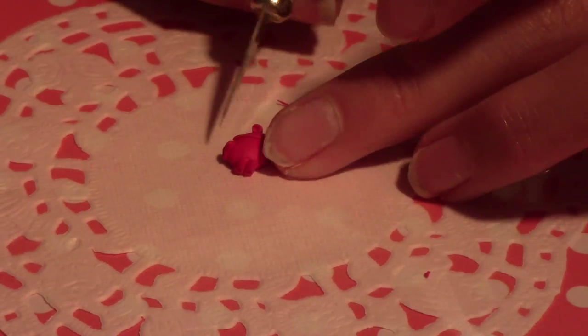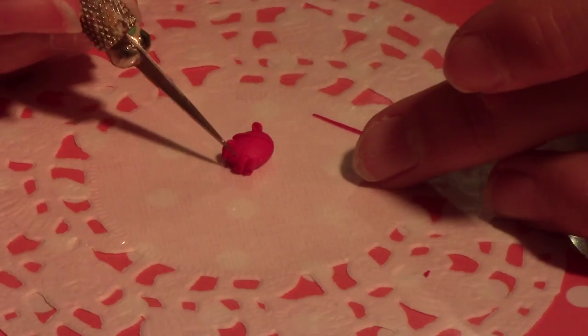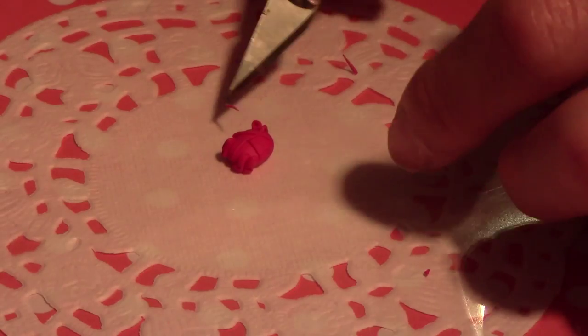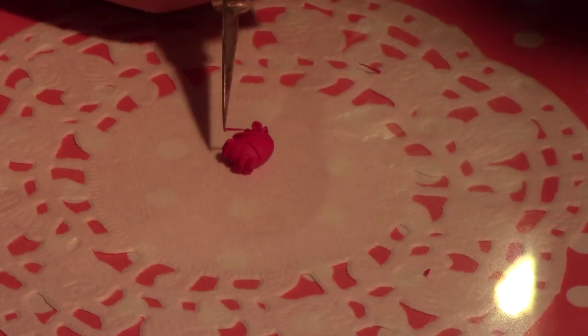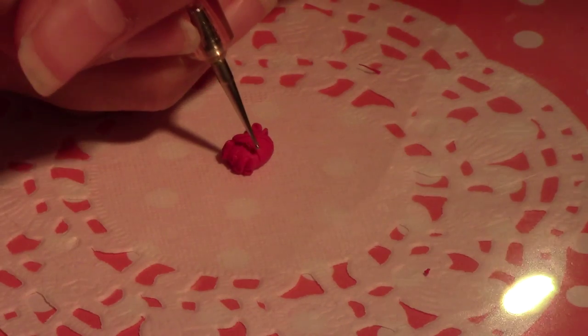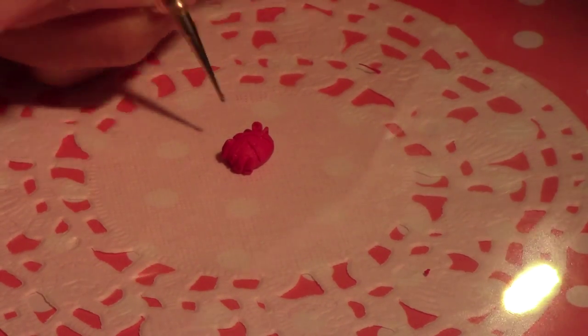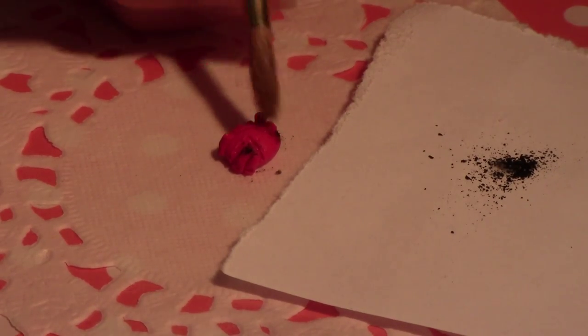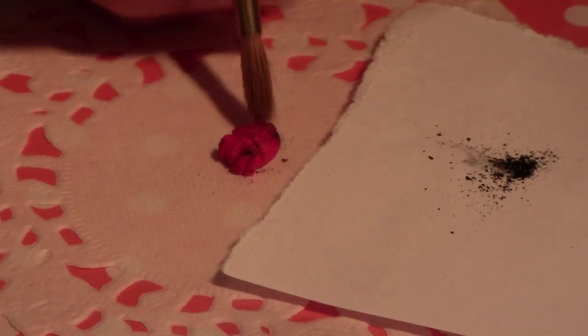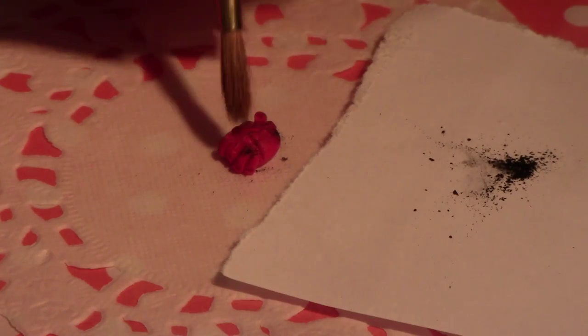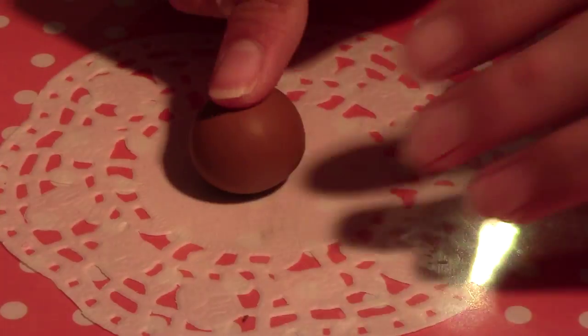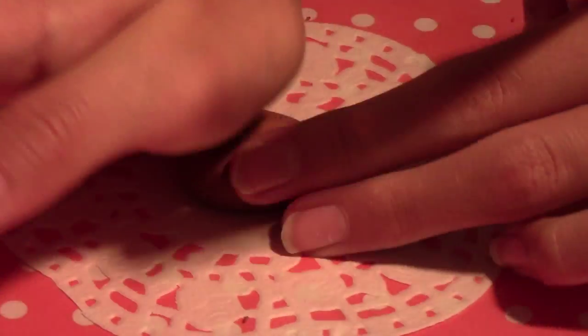For the blood vessels, I continued rolling my coil but very finely, and I place them randomly on my heart. Then to give an aged effect, I take black pastel and my brush, and I put some all over my heart. Be careful not to put too much, or you'll end up with big stains. It's better to blend your brush well than to put tons of it.